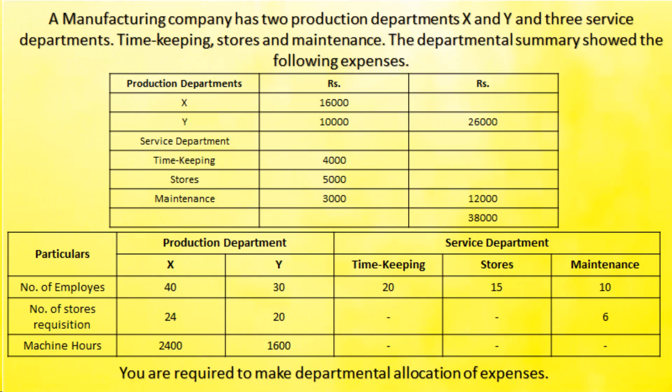Now the question is on the screen. Please take a screenshot or write down the question by pausing the video so that when I'm explaining the solution, it will be easy for you to understand. A manufacturing company has two production units X and Y, and three service departments: timekeeping, stores, and maintenance. The departmental summary shows expenses of 16,000 for X, 10,000 for Y, 4,000 for timekeeping, 5,000 for stores, and 3,000 for maintenance.